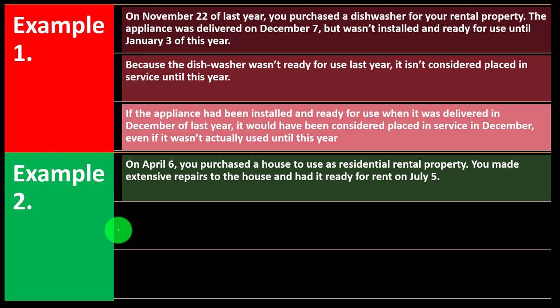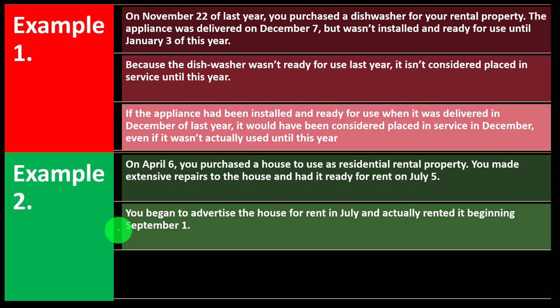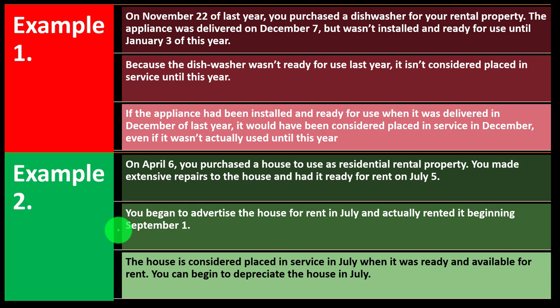Example number two: on April 6th, you purchase a house to use as residential rental property. You made extensive repairs to the house and had it ready for rent on July 5th. You begin to advertise the house for rent in July and actually rented it beginning in September. The house is considered placed in service in July when it was ready and available for rent. So we have three dates: April 6th you purchased it, July it was ready, and September it was actually rented.